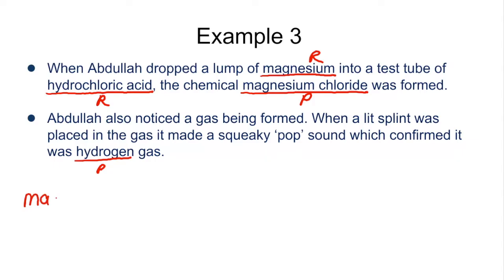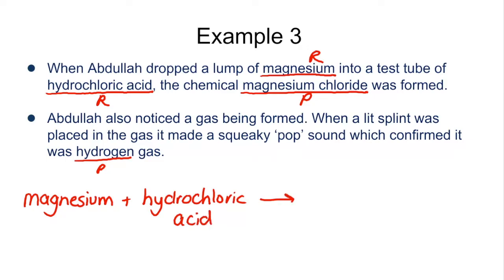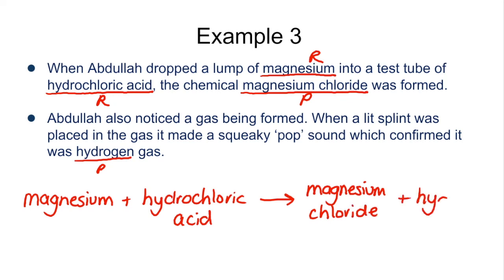Taking those reactants and products, let's write our equation: magnesium plus hydrochloric acid, with an arrow — remember, always use an arrow, never equals — reacts to form magnesium chloride plus hydrogen. That's our word equation, and you can see it's much simpler to follow compared to the two sentences we were looking at a couple of minutes ago.